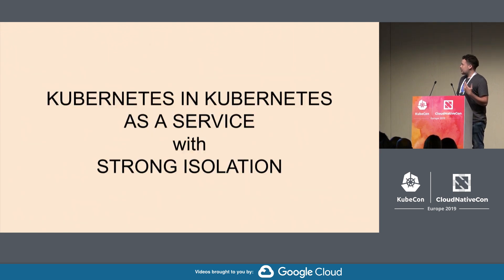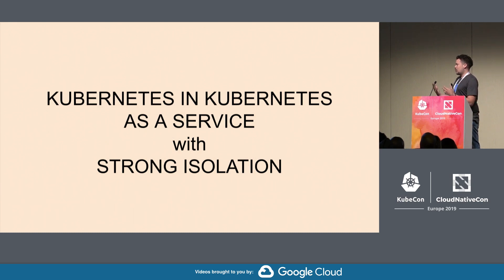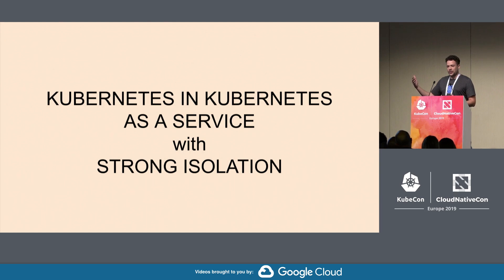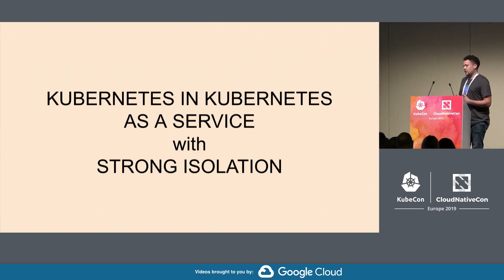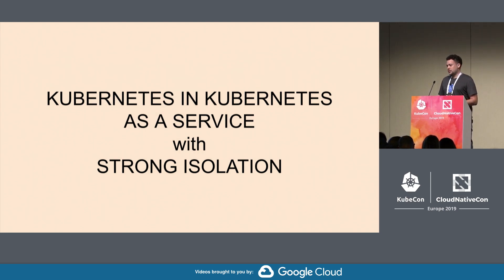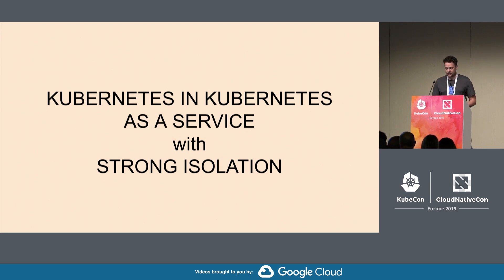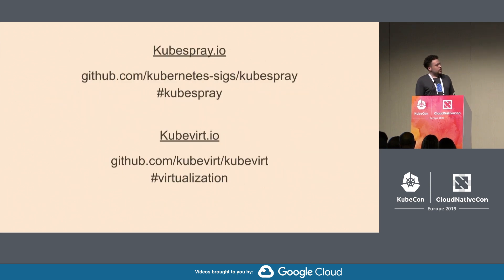So if we think about it, we've more or less created for KubeSpray CI a Kubernetes-as-a-service, where each branch and each PR will trigger a request for a new cluster to be deployed. In our use case we do it with strong isolation using VMs for short-lived test environments, but obviously you can also think about use cases where each team gets an isolated cluster.